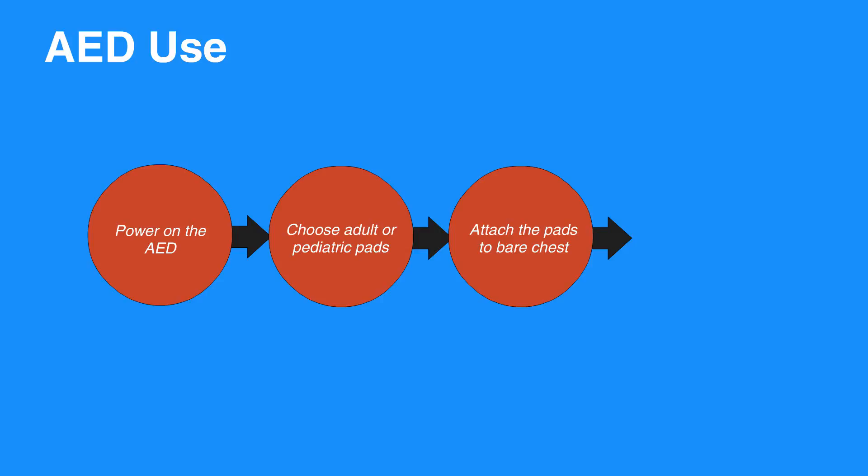Place one pad on the upper right side and the other on the chest a few inches below the left arm. Clear the area to allow the AED to read rhythm, which may take up to 15 seconds.